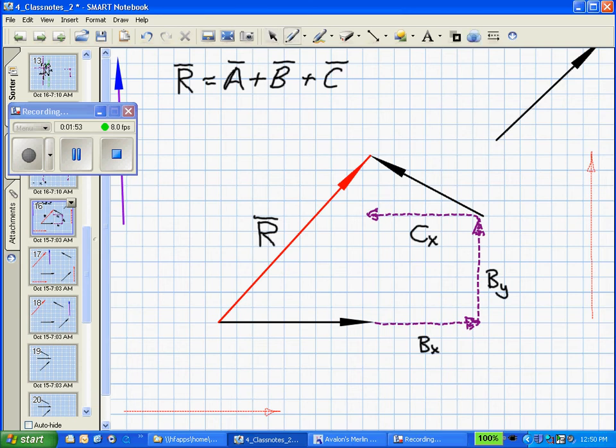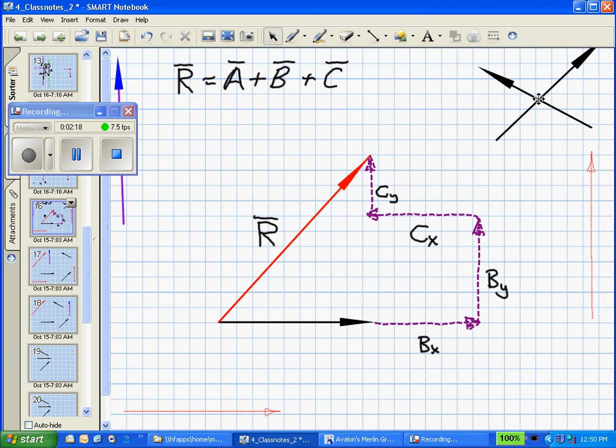In the y direction, the vector c sub y can be shown to be this way, and we'll designate that as c sub y. Once we have vectors c sub x and c sub y in there, the sum of those two vectors equals vector c, and so we don't need vector c anymore.